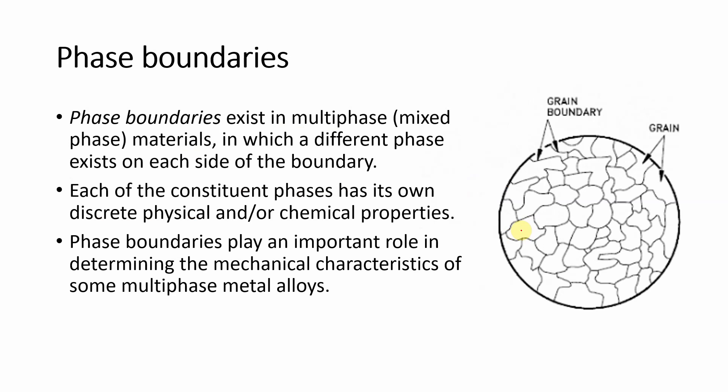Phase boundaries exist in multi-phase or mixed-phase materials. In such materials, at the same temperature, different grains can have different phases — for example, one grain may be in liquid phase and another in solid phase. The boundaries between regions of different phases are called phase boundaries.